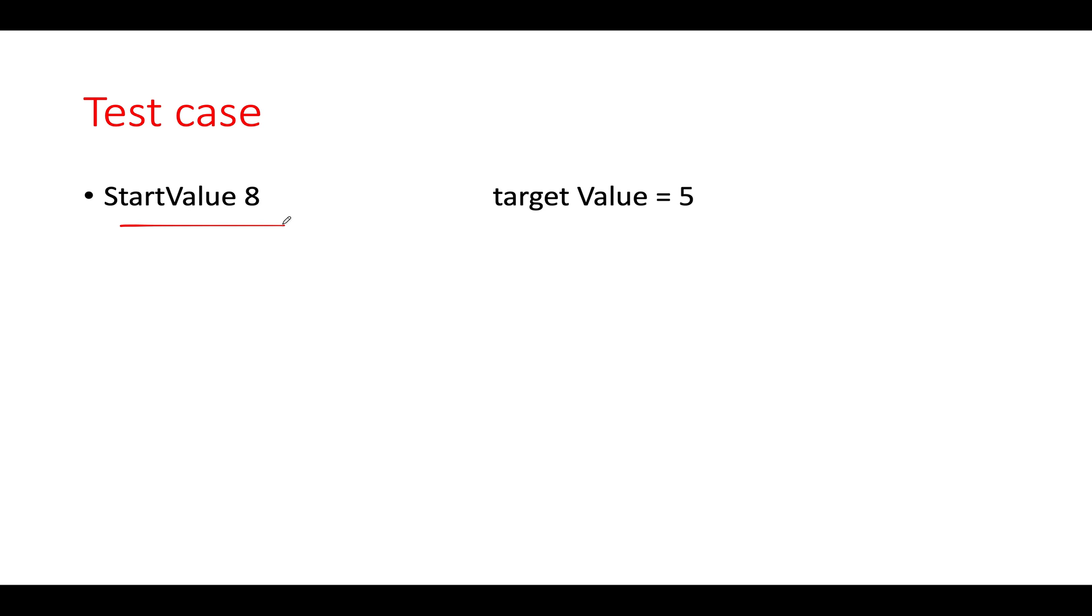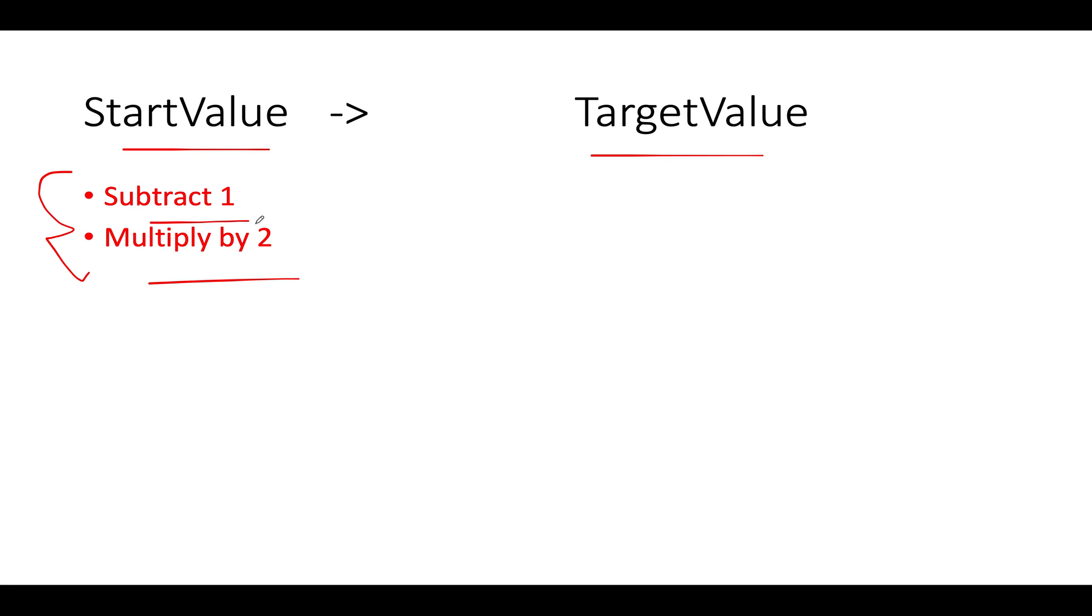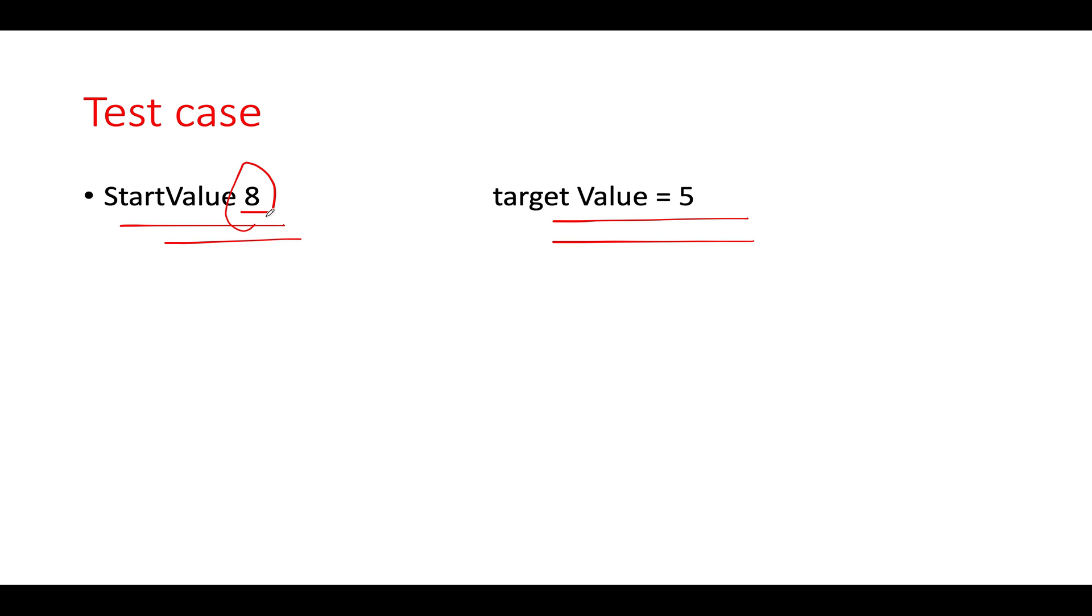Now let's walk through a few test cases so that we develop the kind of algorithm that we are looking for. Let's hypothetically assume that right now the start value happens to be 8 and the target value happens to be 5. So obviously multiplying the start value with 2 will increase the target value. As a result of which there is only one way out which is you subtract 1 from the start value. And here we go, we reduce it to 7 first followed by 6 followed by 5. So what is the observation here? The observation is whenever you see that the start value is greater in quantity than your target value.